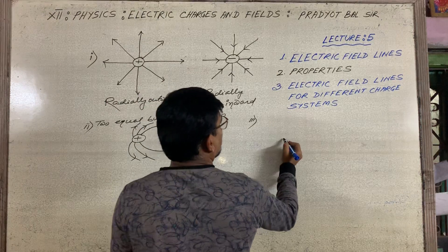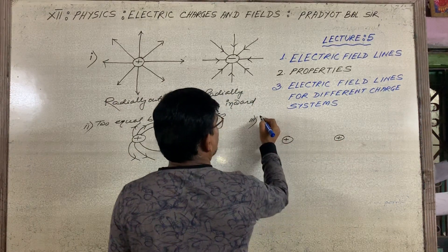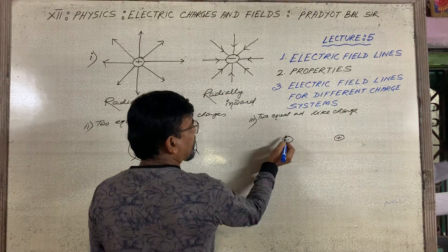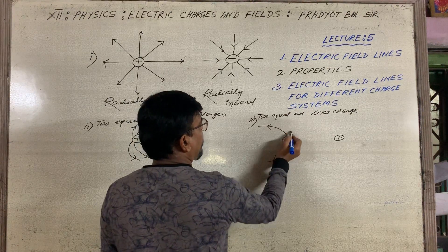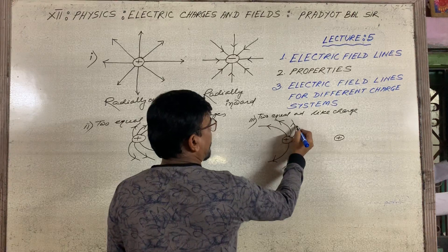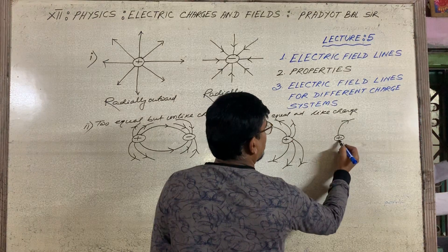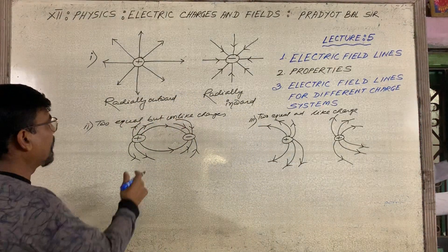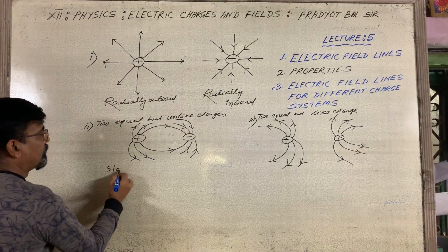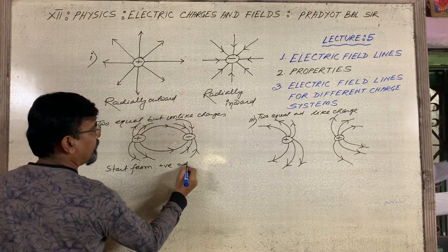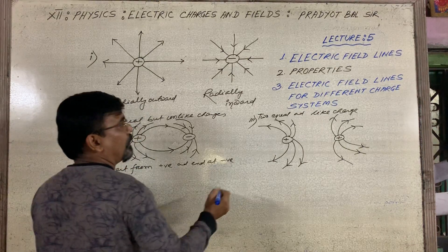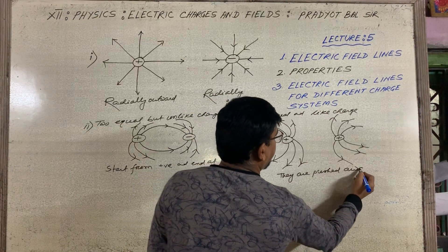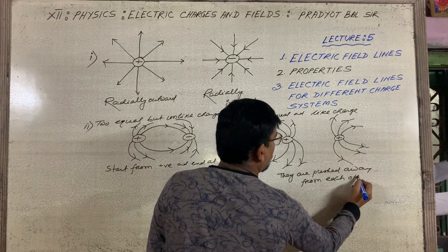If I take the third case: two equal and like charges. For two equal and like charges, the electric field lines are pushed away from each other. You can take two negative charges as well — the same electric field line direction applies. So for two equal but unlike charges, lines go from positive to negative; for two equal and like charges, they are pushed away from each other.